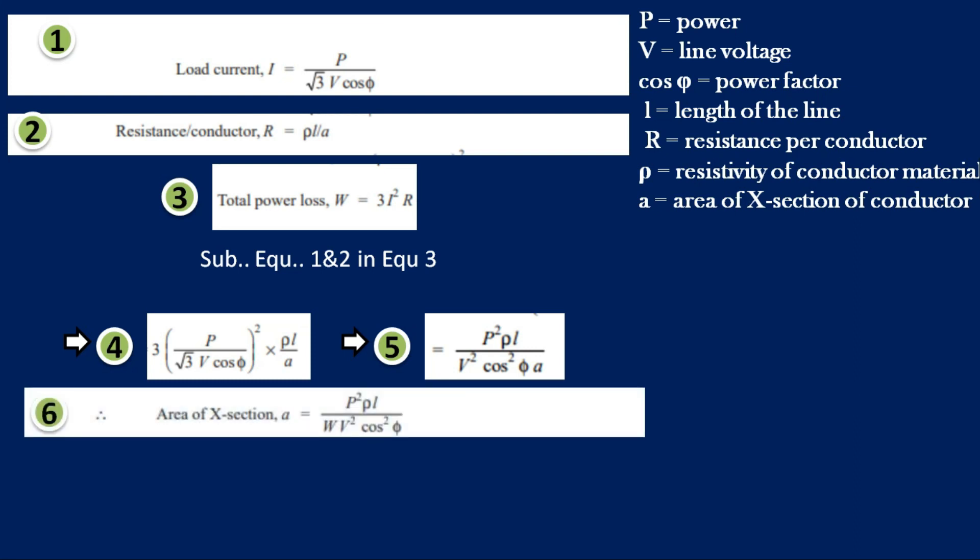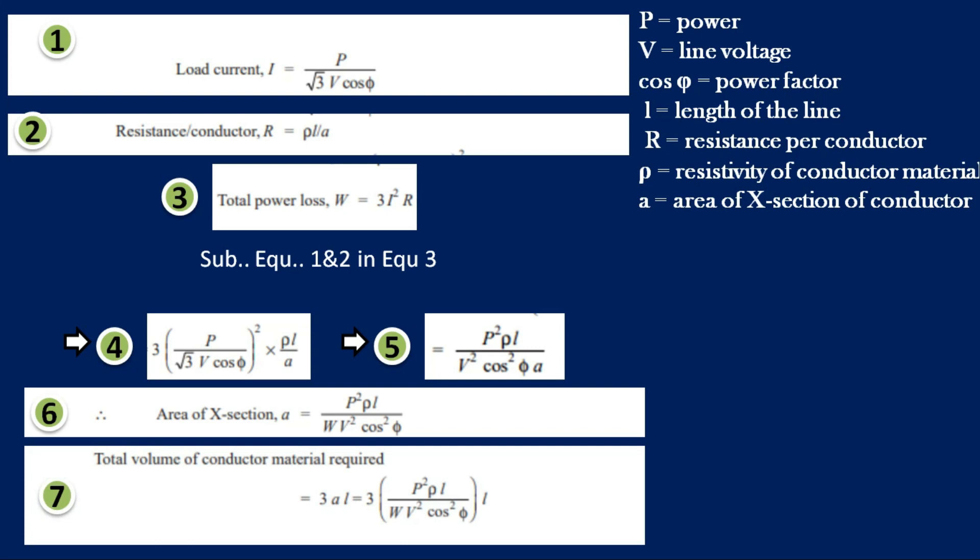The area of cross section is derived from the equation. Area of cross section equals P squared times rho times L divided by W times V squared. The total volume of conductor material required is 3AL — that is, 3 times area times length.